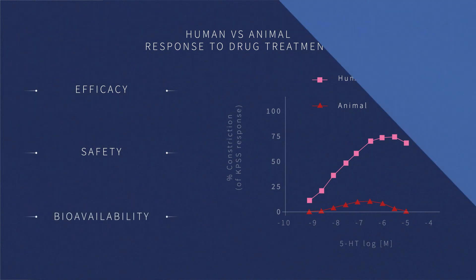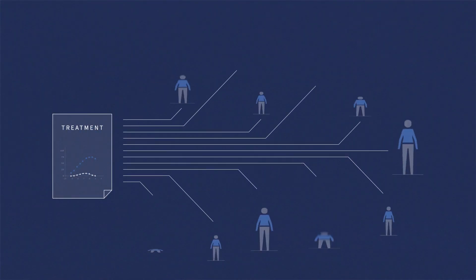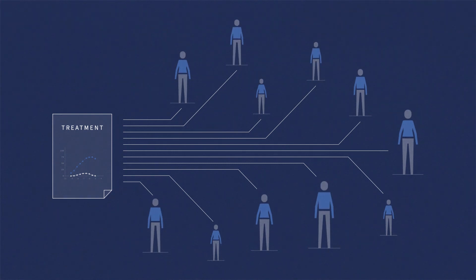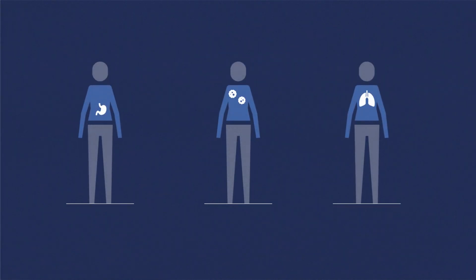Diseased human tissues can also be sourced so that clinical response can be related to donor medical history and genotype. This includes samples from donors with inflammatory conditions such as IBD, psoriasis and asthma.